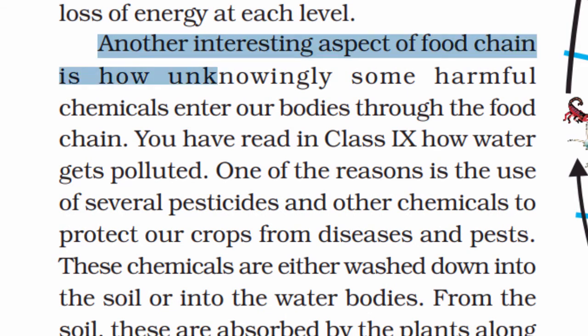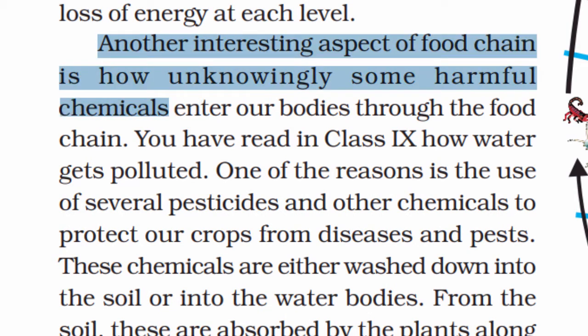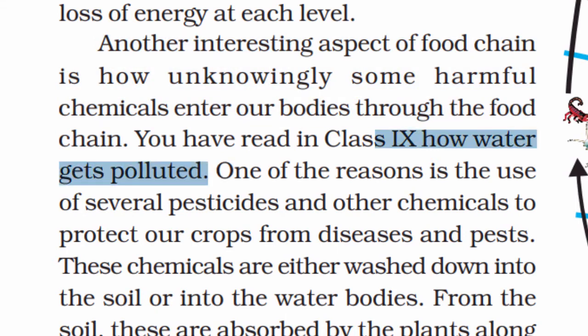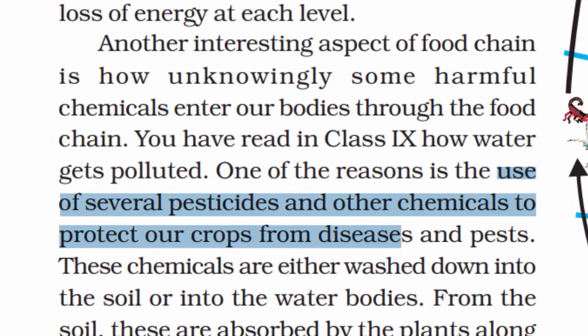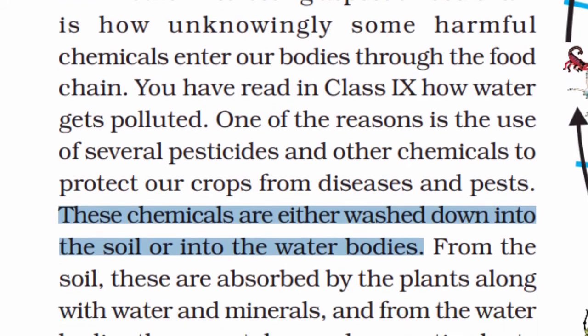Another interesting aspect of the food chain is how unknowingly some harmful chemicals can enter our bodies through the food chain. One of the reasons is the use of pesticides and other chemicals to protect our crops from diseases and pests. These chemicals are washed down into the soil or water bodies.